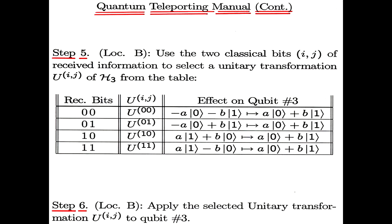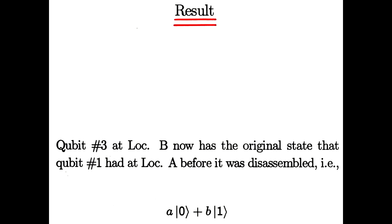In result, he applies, well, he does apply a selected unitary transformation to qubit number three. And the result is the following. Qubit number three now has the original state that was at location A, and qubit number one now has been disassembled, destroyed. So the no cloning theorem has not been violated. Okay, let's move on to some other subjects. We've talked about teleportation.